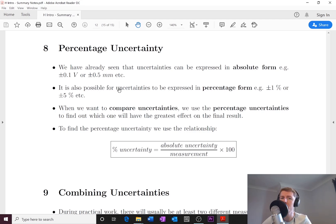It's also possible, however, and actually more important for us to be able to express uncertainties in percentage form. So as an example you could have your measurement plus or minus 1% or a measurement plus or minus 5%.